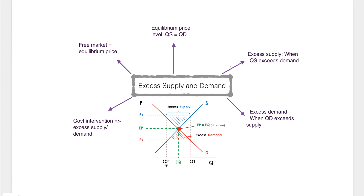So how does this link to our topic of excess supply and demand? Well, excess supply is when the quantity supplied is greater than the quantity demanded. And excess demand is when the quantity demanded is greater than the quantity supplied — so there's more demand in the market than there is supply.